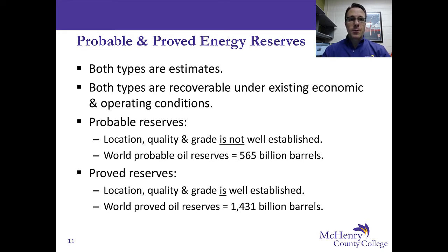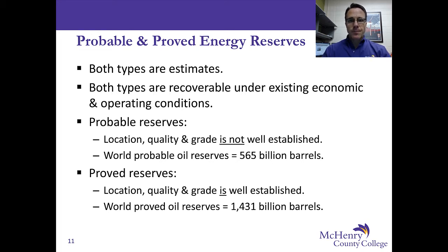The difference between the two is that probable reserves are where the location, quality, and grade of the energy reserves are not well established. Right now, for example, the world's probable oil reserves — and everybody wants to know about oil — is about 565 billion barrels. That is an enormous number, but again, that number is a probable reserve number.